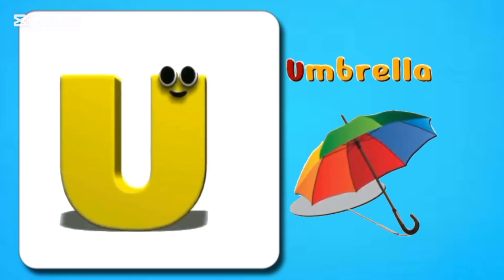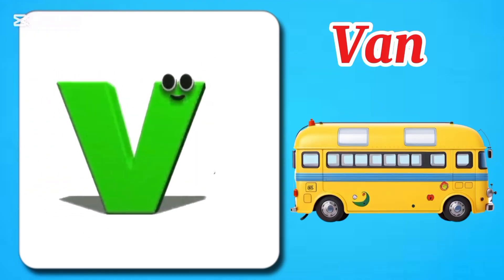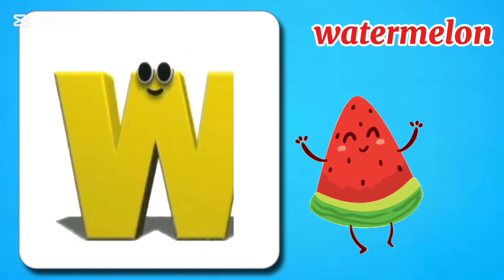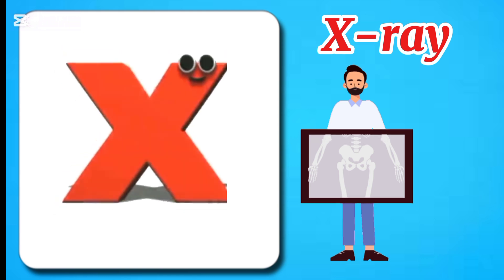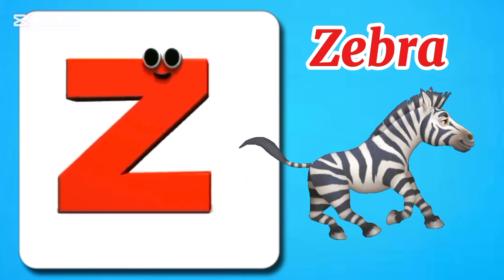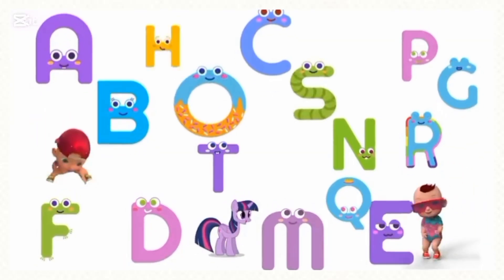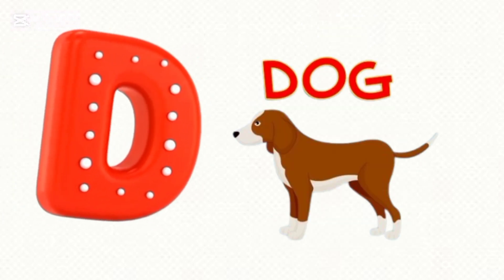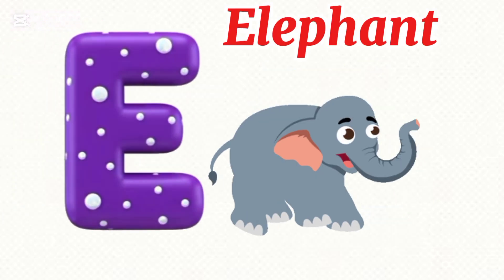U is for umbrella, u-u-umbrella. V is for van, van, van. W is for watermelon, wa-wa-watermelon. X is for x-ray, x-ray. Y is for yo-yo, yo-yo, yo-yo.